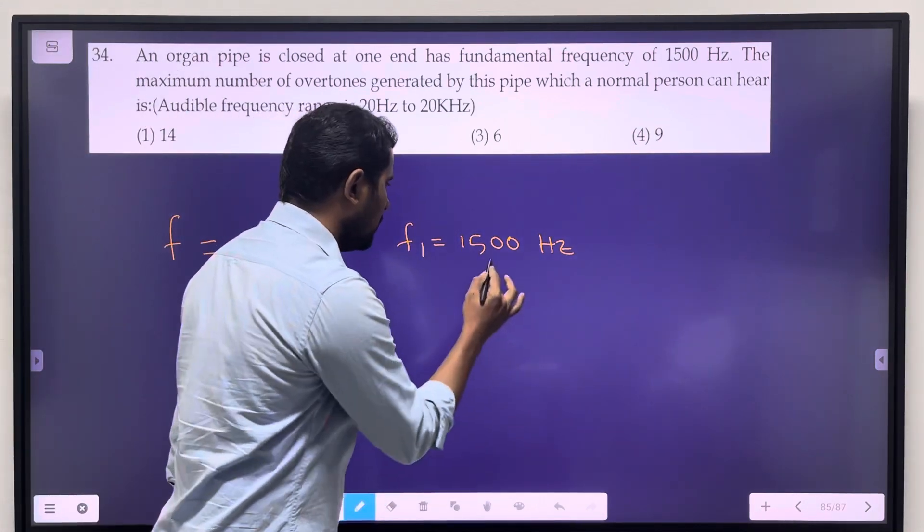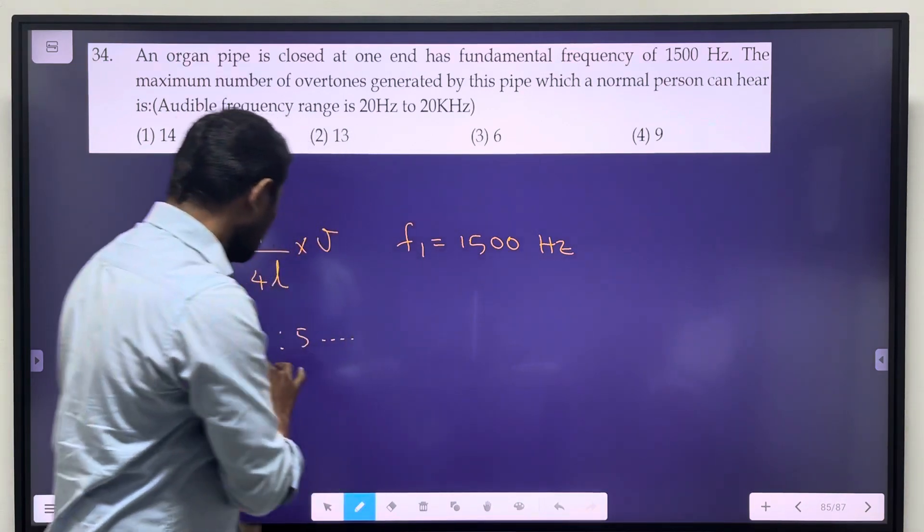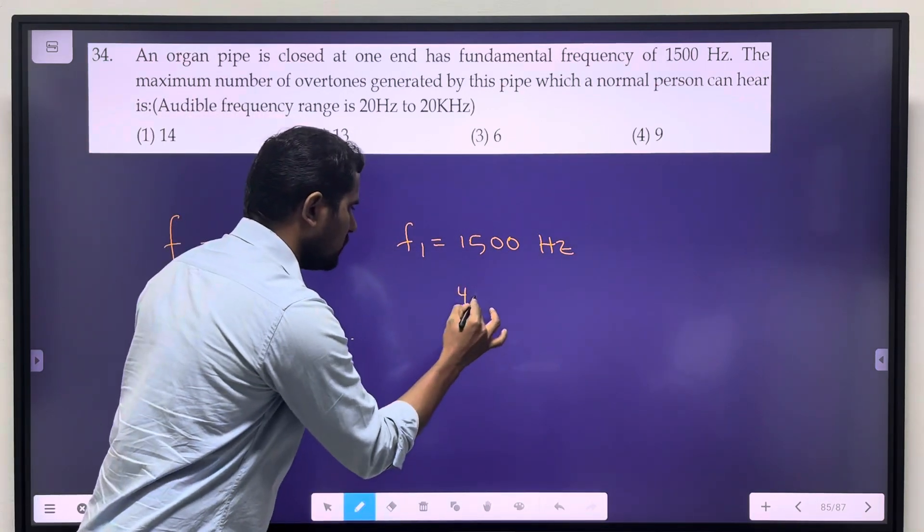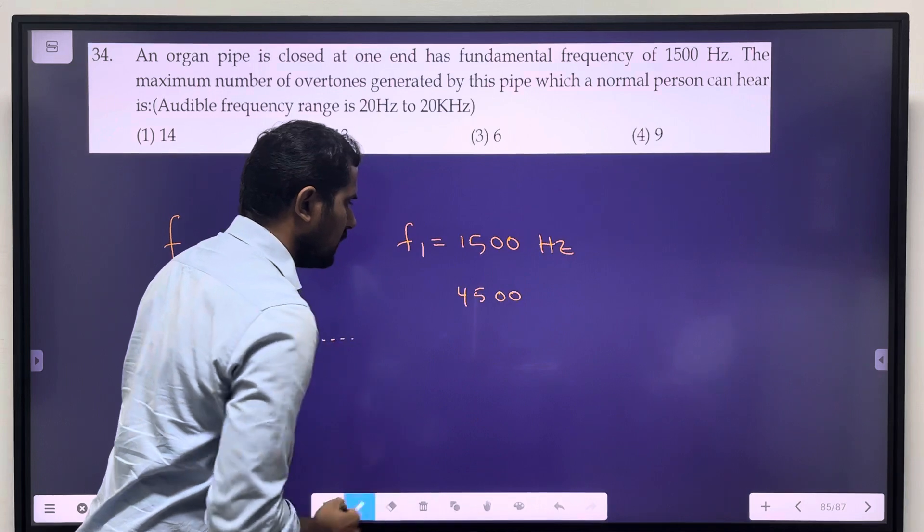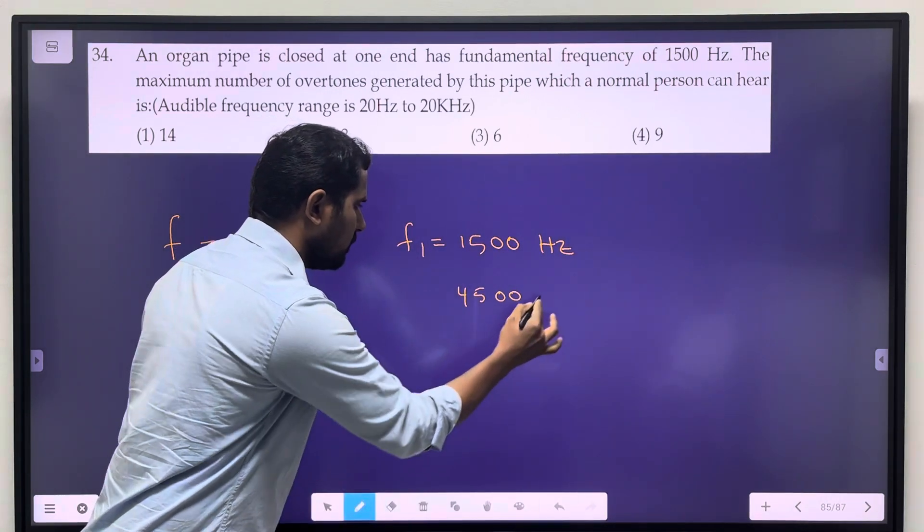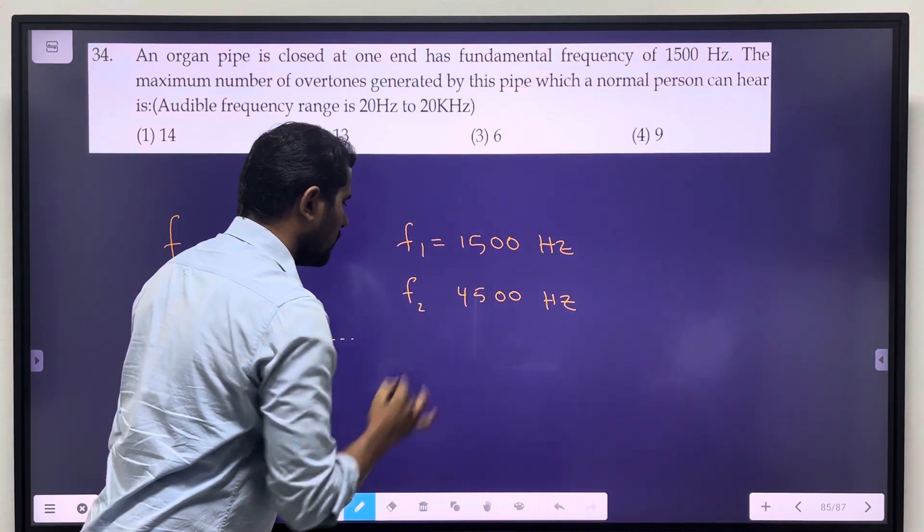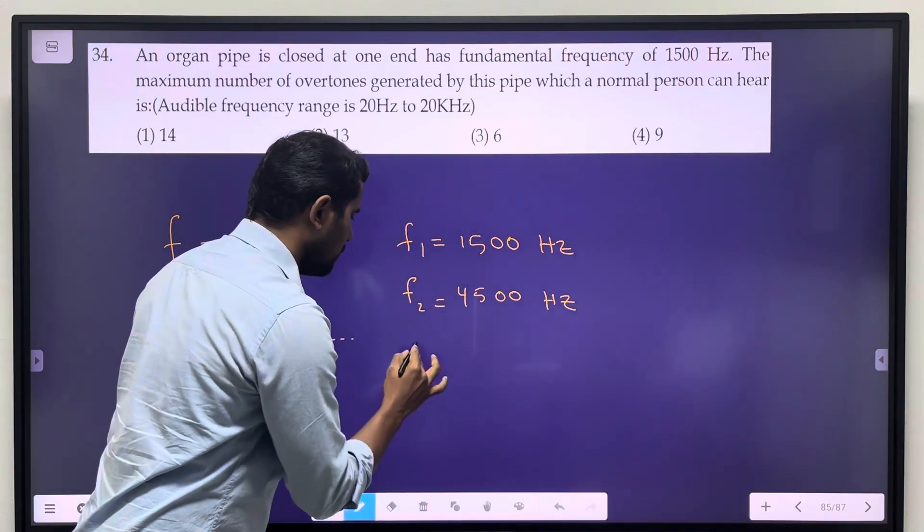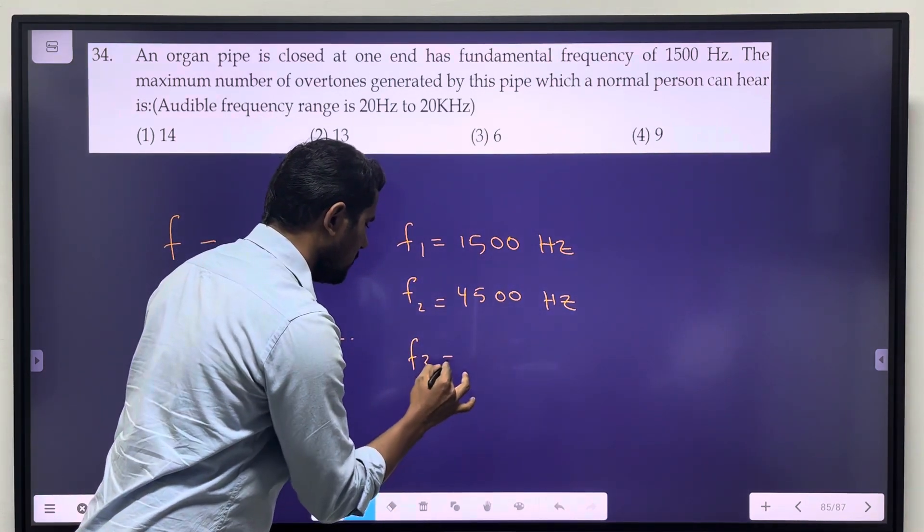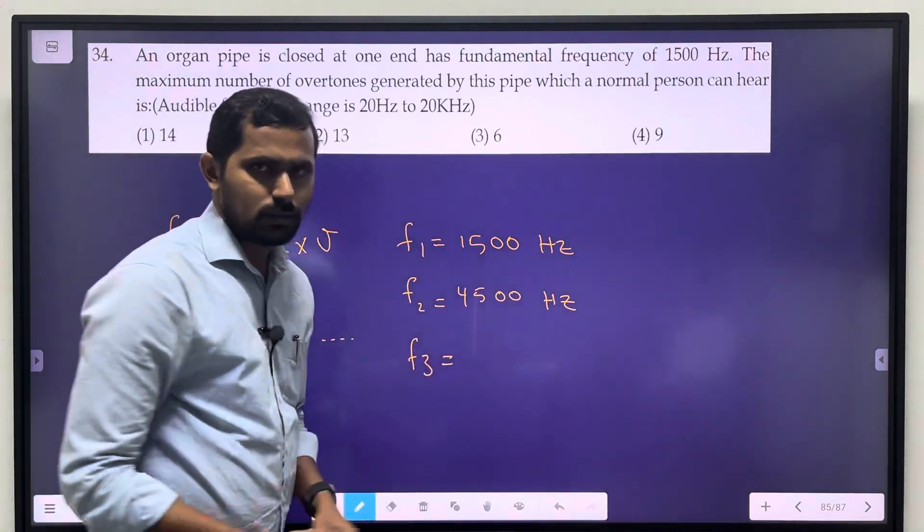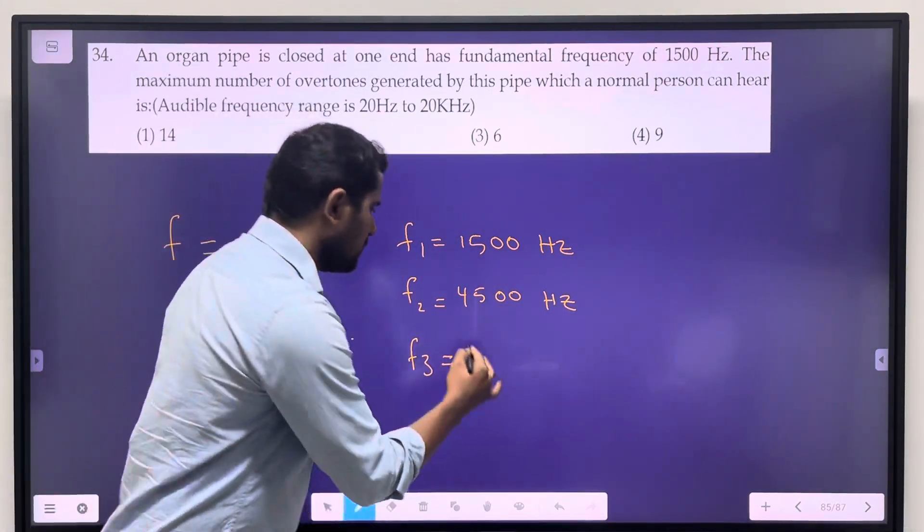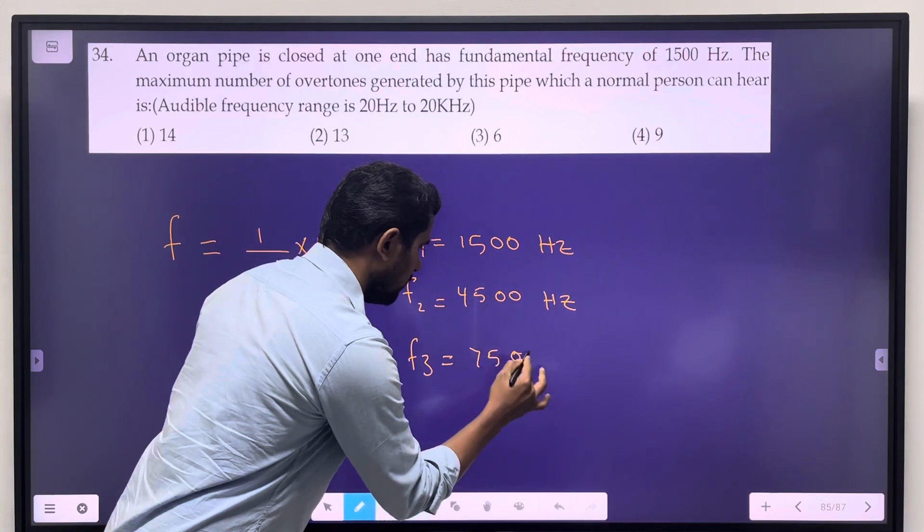Now we have 1500, next 4500, then 4500 Hz. Now we have the 2nd harmonic, 3rd harmonic, f3 is equal to 1500.